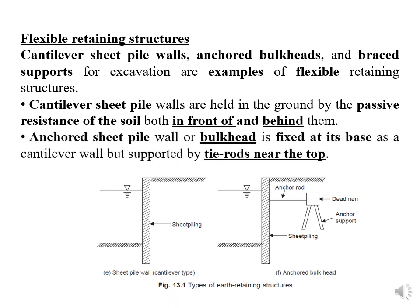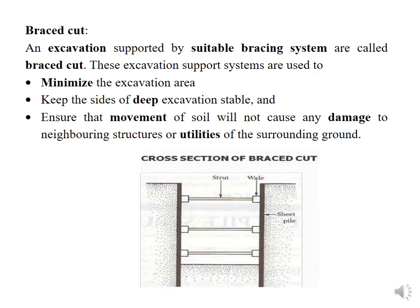Anchored sheet pile walls or bulkheads are fixed at the base like a cantilever wall but are also supported by tie rods near the top. As shown in the right-hand figure, the sheet pile is anchored inside the soil behind the wall so it can take more horizontal stresses and remain stable. A braced cut is an excavation supported by suitable bracing systems.